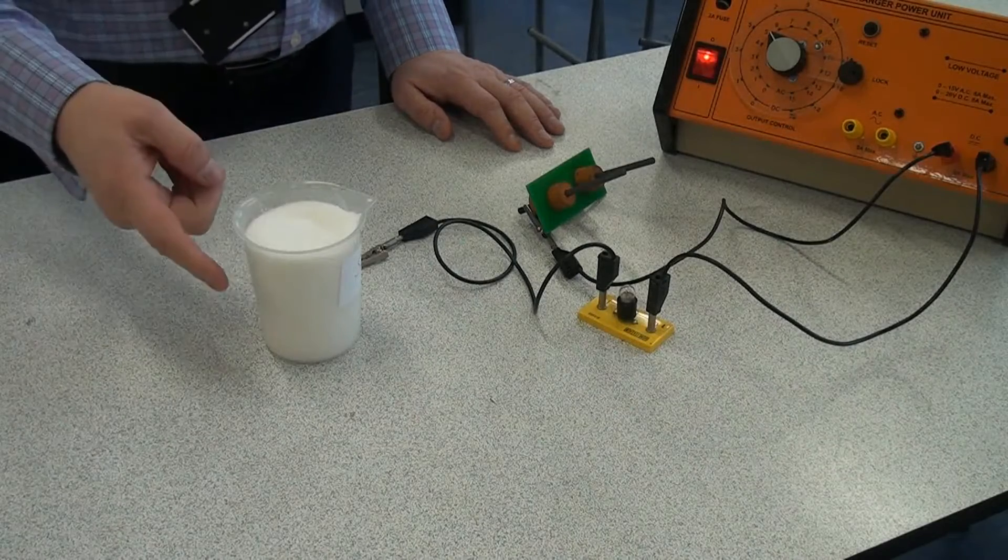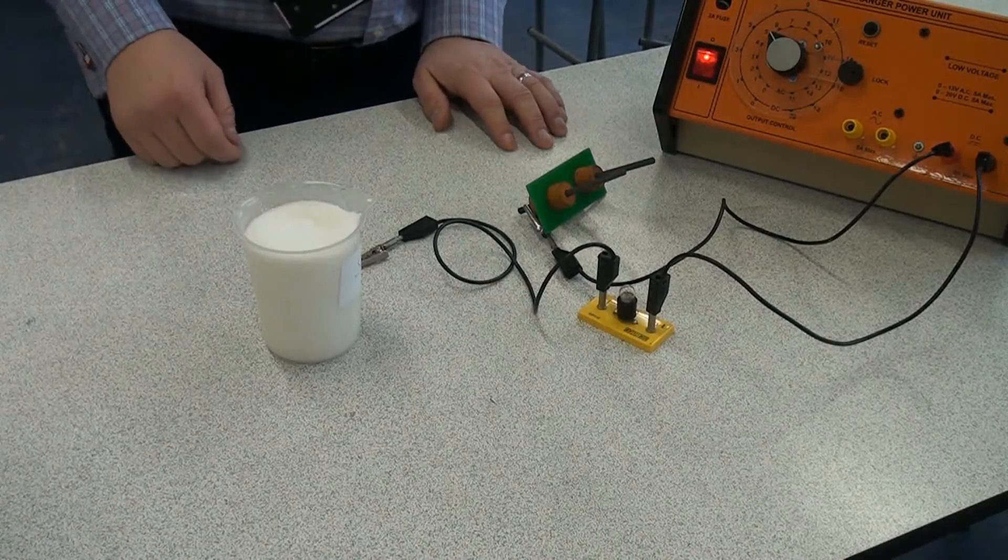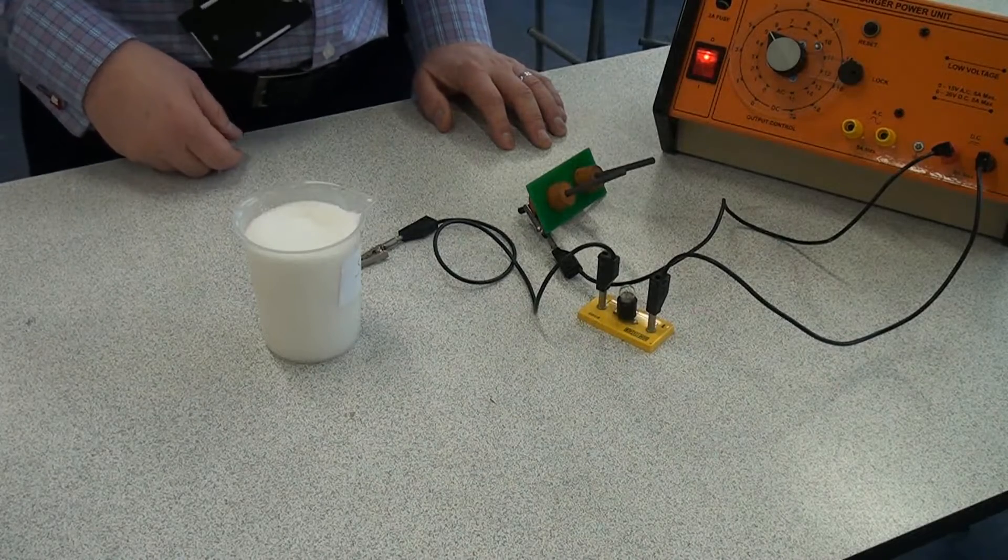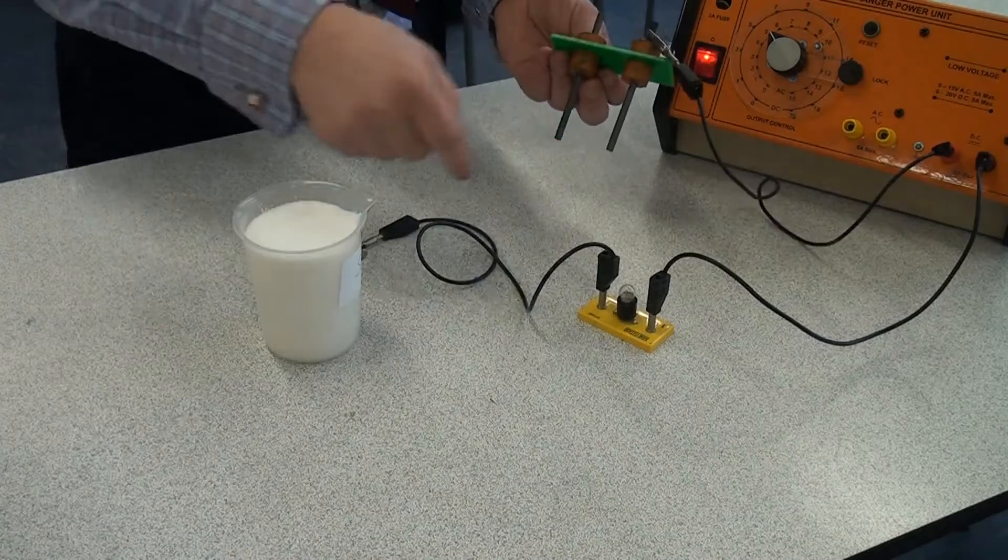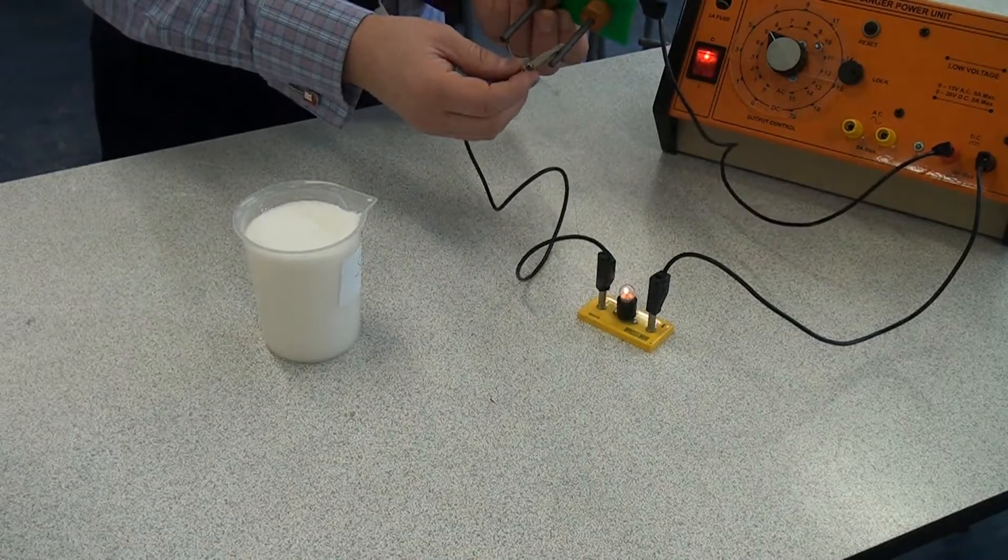So staying with the sugar as my covalent compound I'm going to see if it conducts electricity when it's in solid form. So here I've got a circuit with some electrodes and a bulb and I'll just check that the circuit is working correctly.